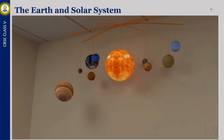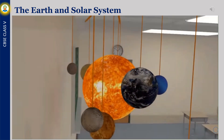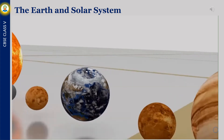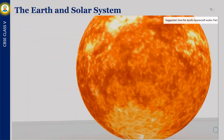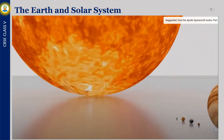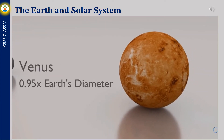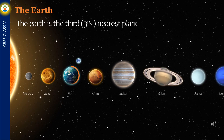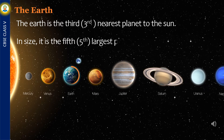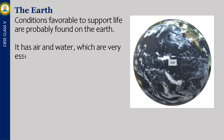Let's see Earth in our solar system. The Earth is the third nearest planet to the sun. In size, it is the fifth largest planet in our solar system. Conditions favorable to support life are probably found on the Earth. It has air and water, which are very essential for survival for all living beings.